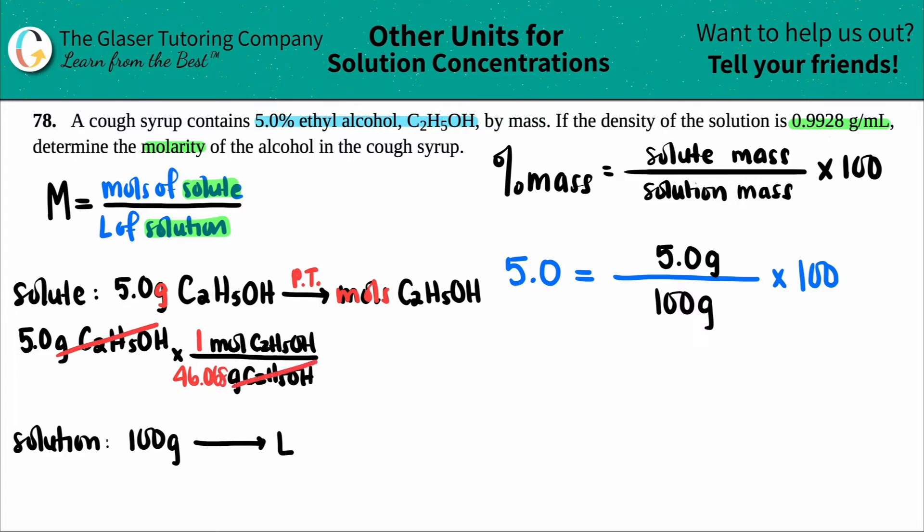There you go. Cancel the units that you can. And now this looks like it's just a simple division. It's five divided by 46.068. So I get 0.1085, and that's moles of the solute, C2H5OH. And that's the number. So if I just make this like this, this is the number that goes on the top. 0.1085 moles.